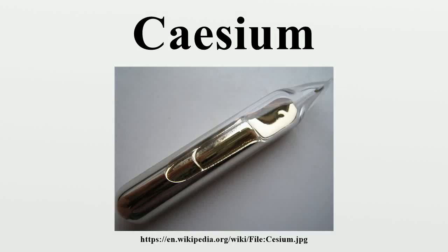Cesium or caesium is a chemical element with symbol Cs and atomic number 55. It is a soft, silvery-gold alkali metal with a melting point of 28 degrees Celsius, which makes it one of only five elemental metals that are liquid at or near room temperature.